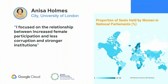Anissa is a master's student of interactive journalism at City University of London. She focused on SDG 5 and SDG 16—gender equality and peace, justice, and strong institutions, respectively. She explored the relationship between increased female participation and less corruption and stronger institutions, and zoomed in on Rwanda's data as an example of positive change.